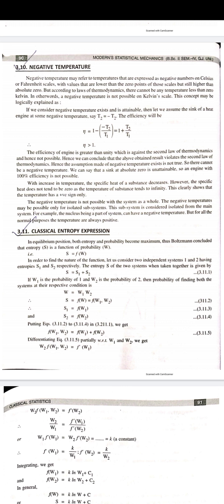So it is an impossible case. We can conclude that the above result violates the second law of thermodynamics. Hence, the assumption made for negative temperature does not exist. There cannot be negative temperature. We can say a sink at absolute zero is unattainable, so an engine with 100 percent efficiency is not possible.